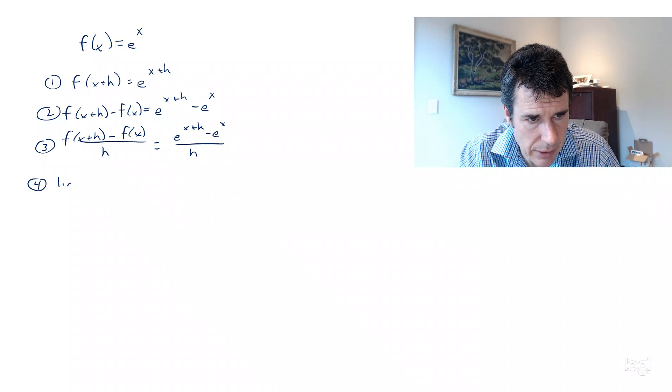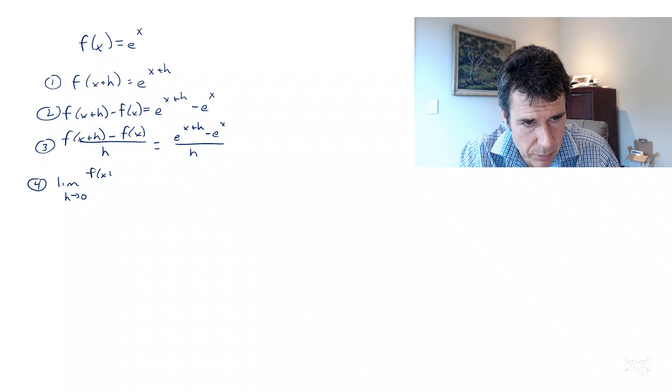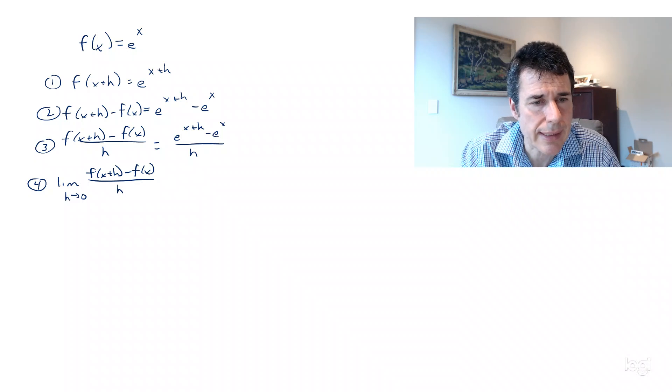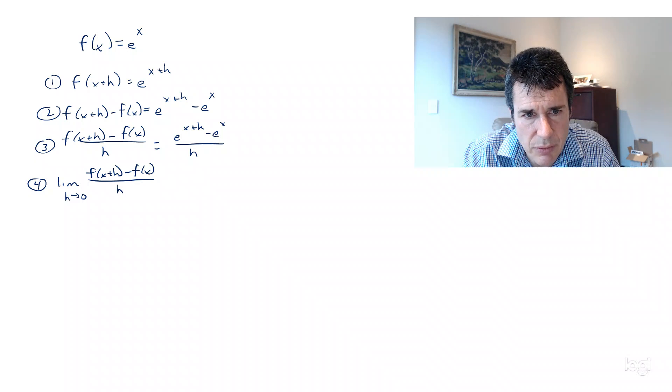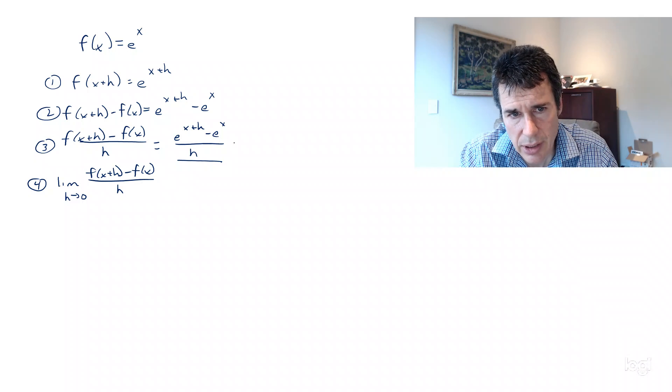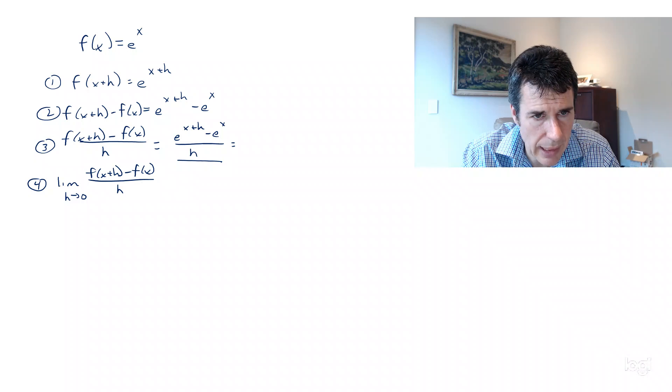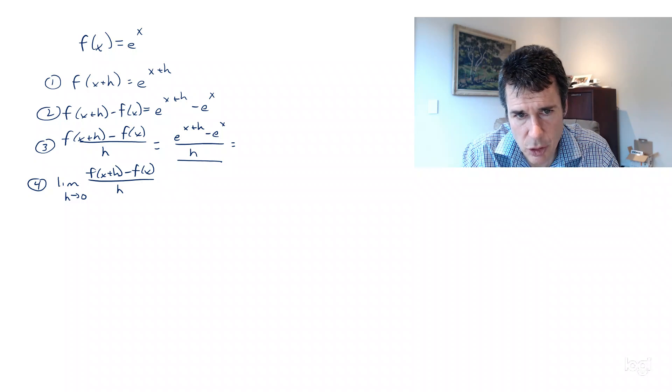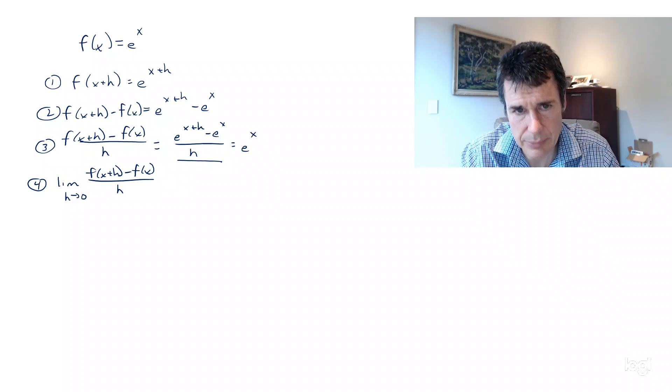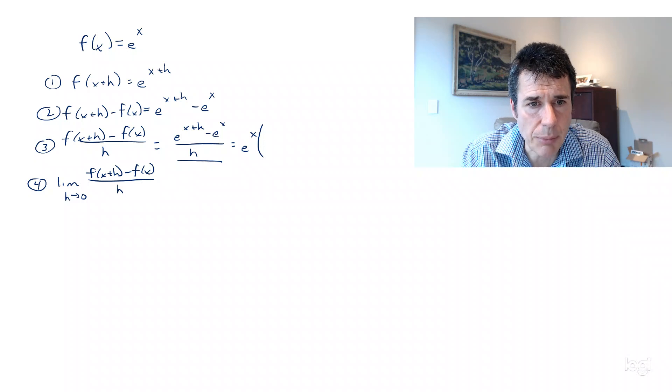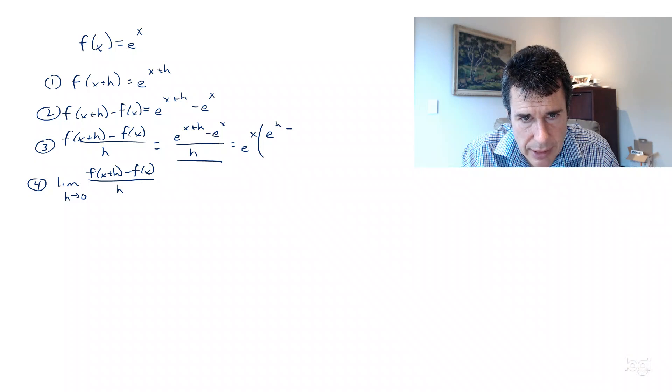we're going to take the limit as h goes to zero of [f(x+h) - f(x)]/h. But before I take that limit, I'm going to do a little bit of work on this function. We can first pull out an e^x from the numerator, so that's e^x times (e^h - 1)/h.